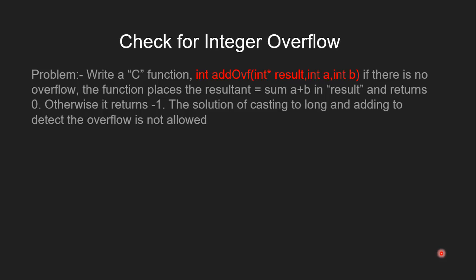The problem statement is: write a C function `int add_ovf` with three parameters. The first parameter is a pointer variable to store the result, and the two other parameters hold the two numbers. If there is no overflow, the function places the resultant of addition of a and b in result and returns zero. Otherwise, if there is overflow, it returns minus one. Casting to long and adding to detect the overflow is not allowed.